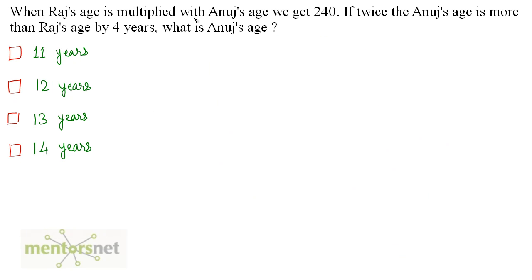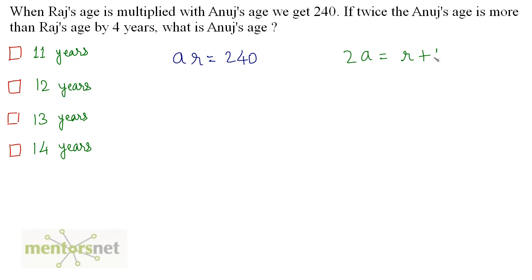When Raj's age is multiplied with Anuj's age, we get 240. If twice Anuj's age is more than Raj's age by 4 years, what is Anuj's age? Let Raj's age be R and Anuj's age be A. So R times A is equal to 240. Twice Anuj's age equals Raj's age plus 4, so 2A equals R plus 4. Therefore, R is equal to 2A minus 4.